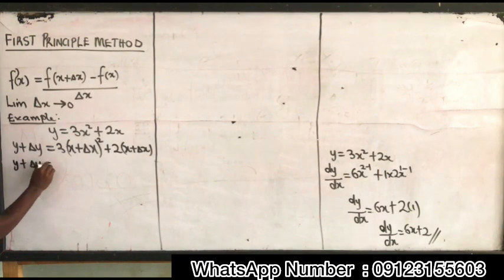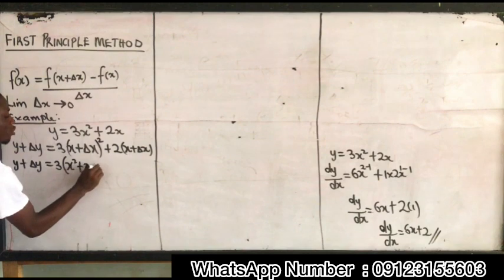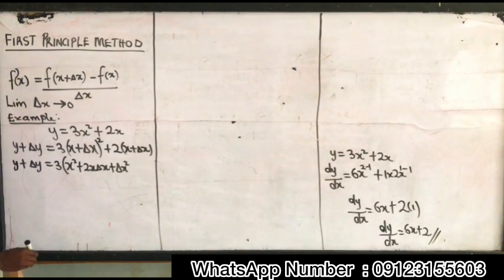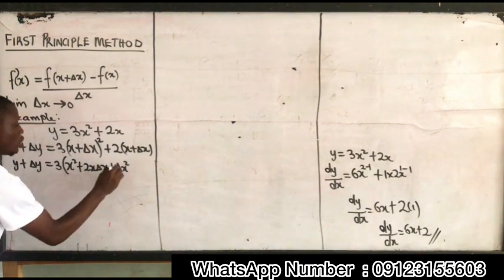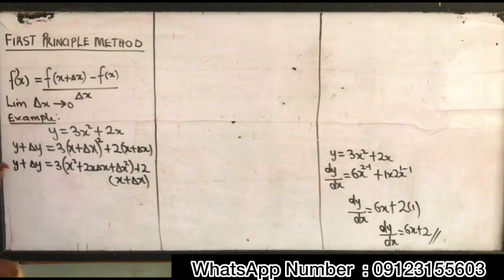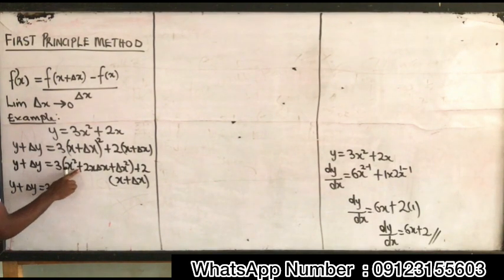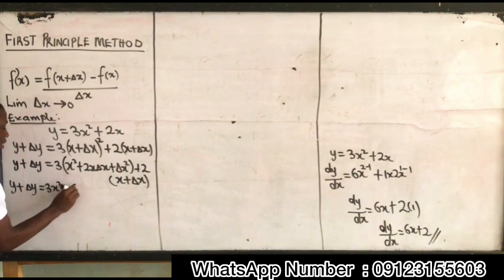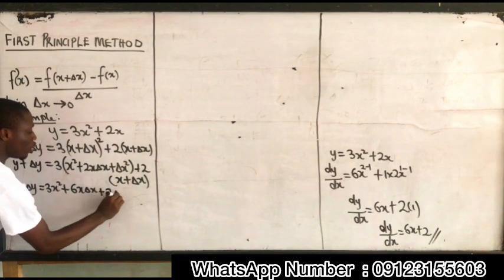I will write y plus change in y is equal to 3 into — expanding using Pascal's triangle — x squared plus 2x change in x plus change in x squared. If you don't know how to expand this, check our previous video on the first method. Plus 2 into x plus change in x. So I expand: 3 multiplied through all terms, and 2 multiplied through.